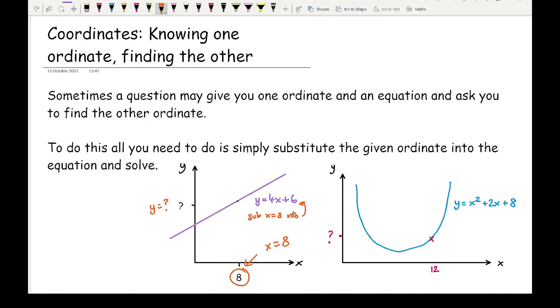When dealing with quadratics and parabolas, we do exactly the same. Here we're given our x ordinate which is 12. We want to work out the y ordinate, so all we need to do is substitute x equals 12 into the above equation and it will give us the respective y ordinate.